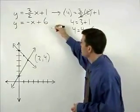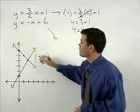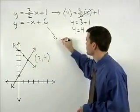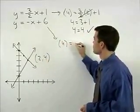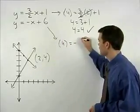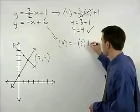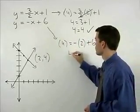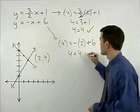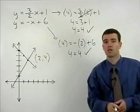For our second equation, y is 4 equals negative x, which is negative 2 plus 6. So 4 equals 4. And our second equation checks.